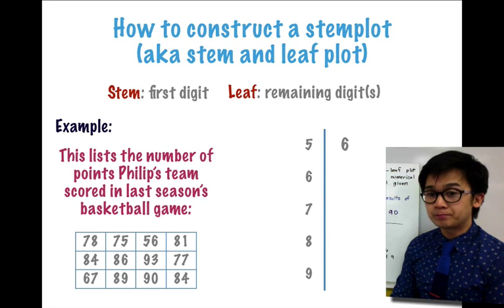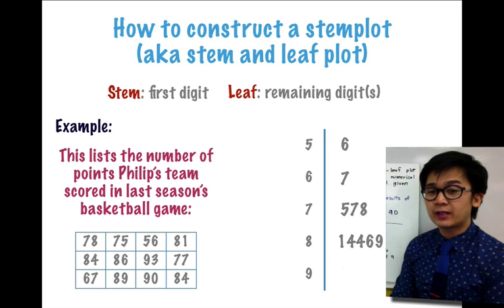So if we're going to plot each one of them, we have 56, 67, 75, 77, 78, and so on.